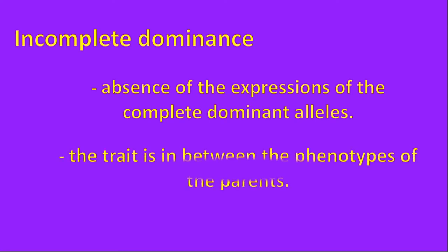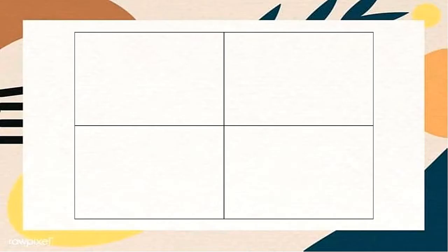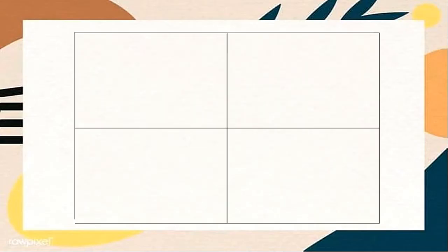This means that a trait is in between the phenotypes of the parents. So the problem is: identify the genotypic ratio and phenotypic ratio of the offspring when pink flower is crossed to a white flower.